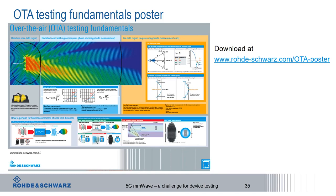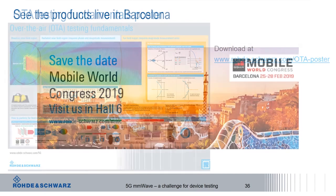If you want to learn more about everything discussed today, Rohde & Schwarz has created an OTA testing fundamentals poster covering all these topics, available to download at the link shown. If you're interested in seeing instruments like the PWC 200, ATS-800R, ATS-1800C, and many more 5GNR testing solutions from Rohde & Schwarz live, please come and visit us in Barcelona at the Mobile World Congress — you'll find us in Hall 6. Thank you very much.